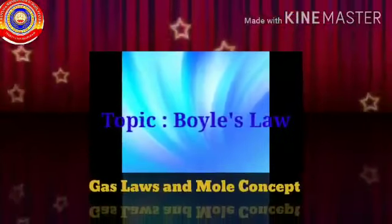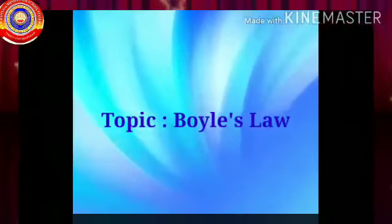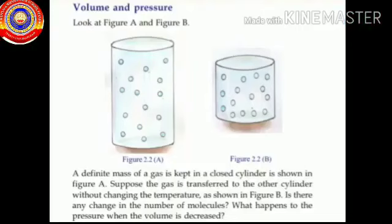Let's learn the relation between volume and pressure. See the figure given in your textbook. A definite mass of a gas is kept in a closed cylinder as shown in figure A. Suppose the gas is transferred to the other cylinder without changing the temperature, as shown in figure B.